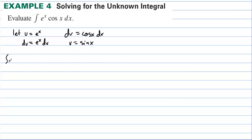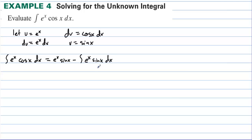The integral of eˣ·cosine(x) dx equals u times v — eˣ·sine(x) — minus the integral of v du, which is eˣ·sine(x) dx. We didn't get very far because we still can't take that integral; it's very similar to what we started with.